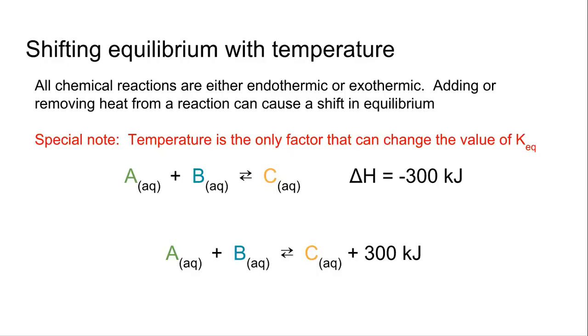So imagine if I added more heat to this situation, wouldn't that add more to the product side? So it would shift to the left to actually get rid of that heat. And that would cause more A and B to be produced than what would normally be produced at 300 kilojoules.